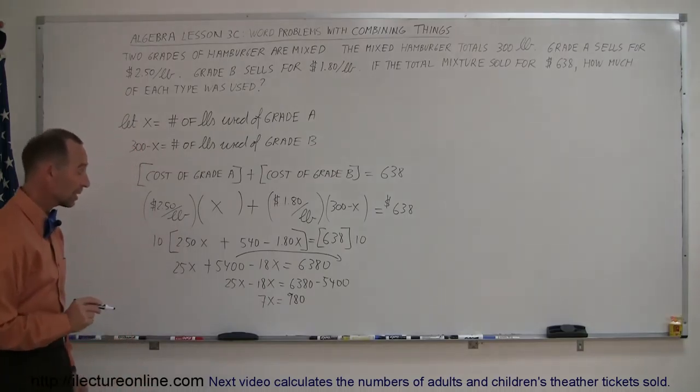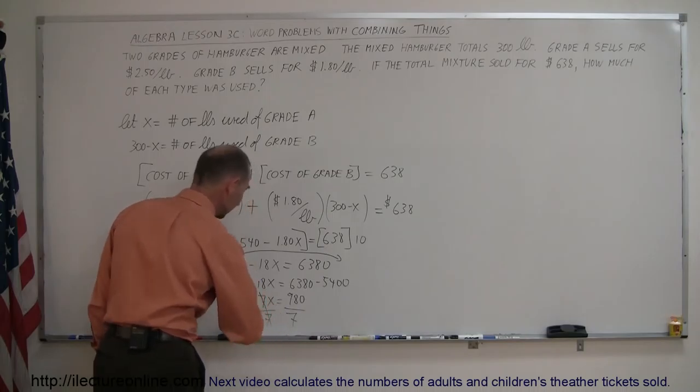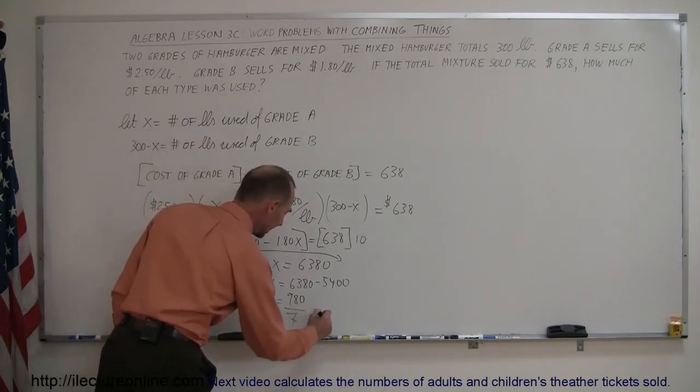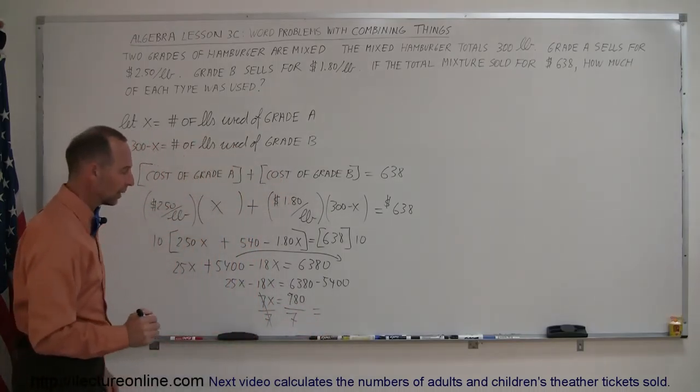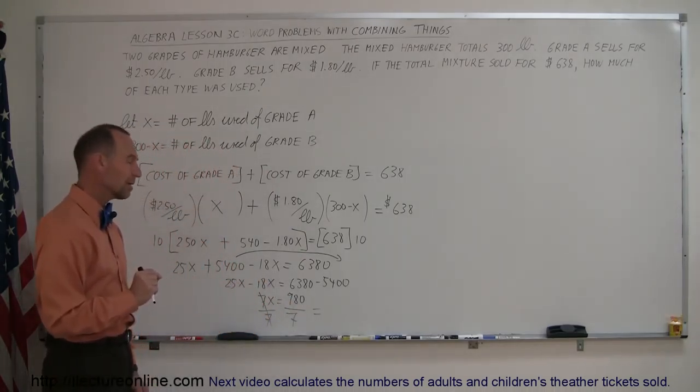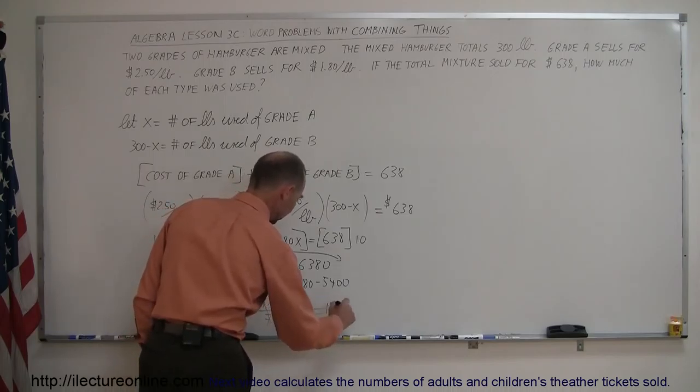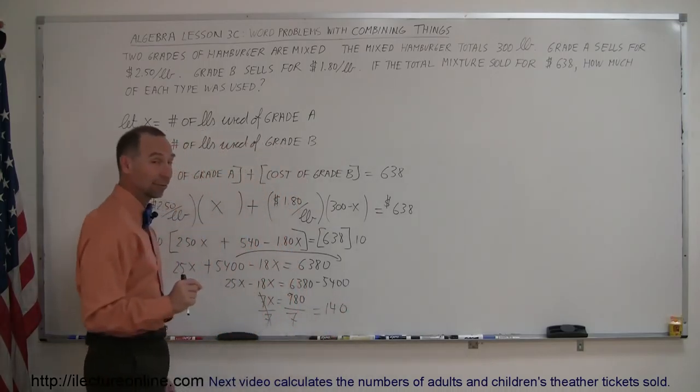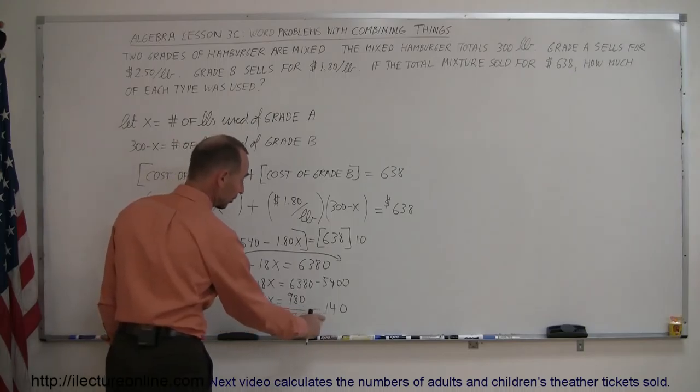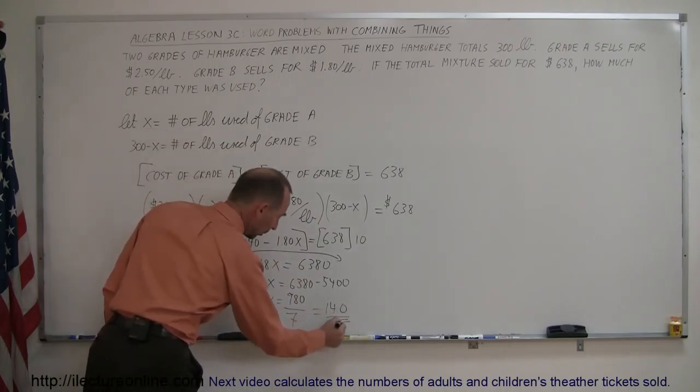The last thing we need to do here is divide both sides by the numerical coefficient in front of the X, which is 7. So, the 7s cancel out. And what is 980 divided by 7? Well, 98 divided by 7 would be 14. And then another zero. We add a zero to that. And if we quickly check, 7 times 100 is 700. 7 times 40 is 280. 700 plus 280 is 980. So, that's correct. X equals 140.